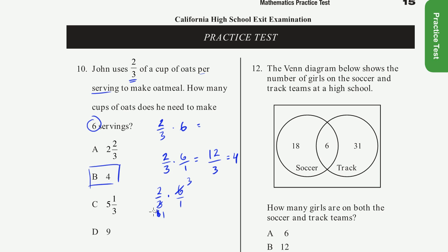And then you just get 2 times, sorry, 6 divided by 3 is 2. So you have 2 times 2 is equal to 4, over 1 times 1. And the whole reason why you could do that is...